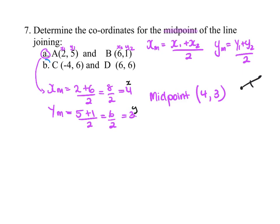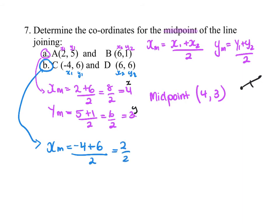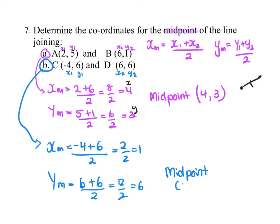For the next pair (C and D): label the points x1, y1, x2, y2. X at the midpoint equals x1 plus x2 over 2, giving 2 over 2 equals 1. Y at the midpoint equals y1 (which is 6) plus y2 (which is 6) over 2, giving 12 over 2 equals 6. So the midpoint between C and D is (1, 6).